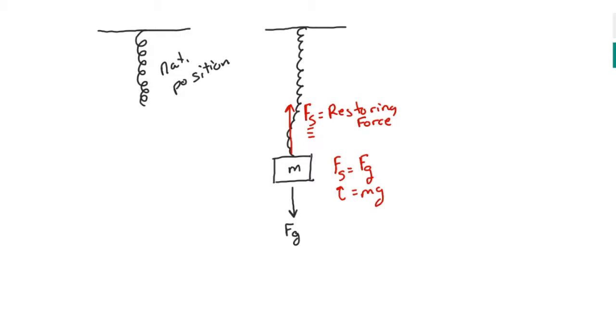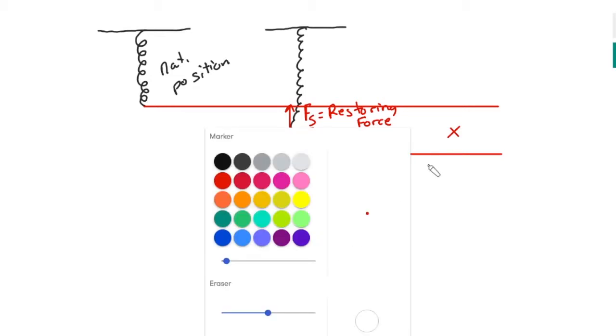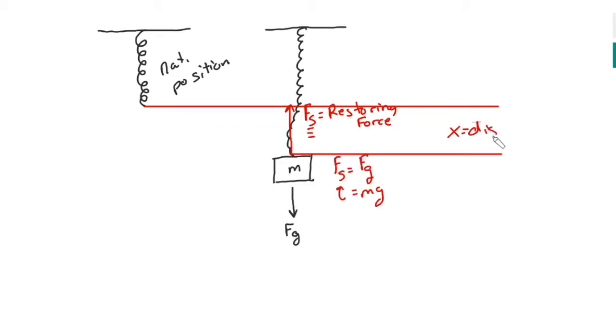The next variable that's going to be very important to us is how far this string stretched. So if I look at this natural position right here, and then I say from here, it stretched this distance to here, I will have that difference. And that difference I call X, and X is equal to the distance stretched or compressed. So in this example, I have stretched this total distance.